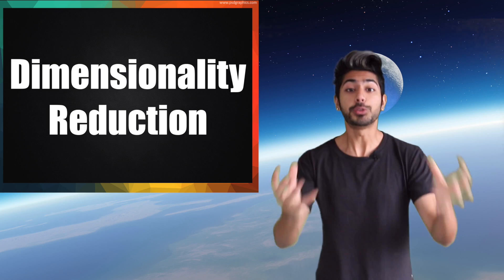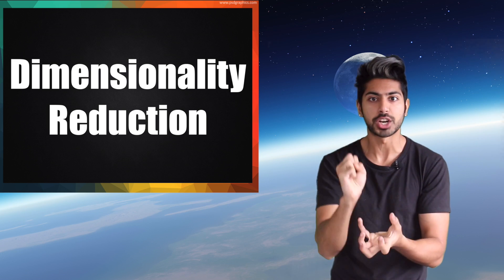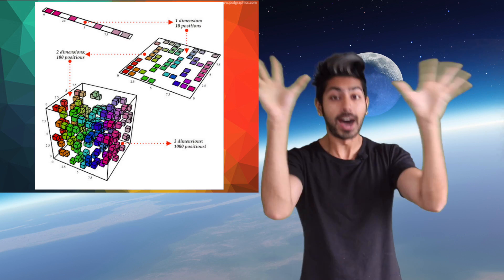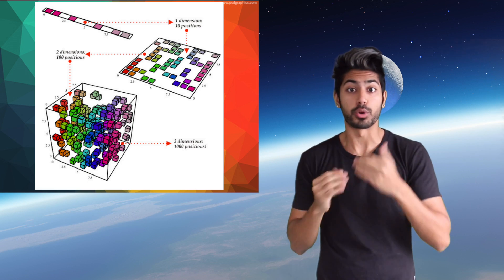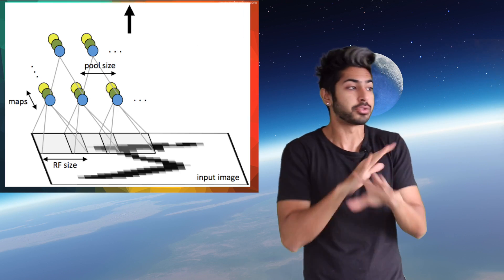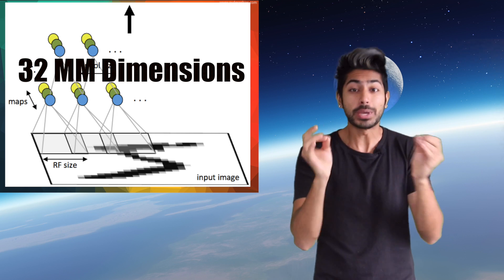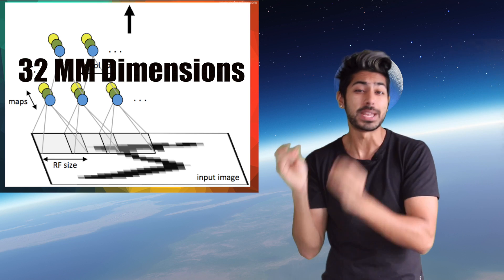There's an entire subfield of machine learning called dimensionality reduction that aims to let us represent high dimensional data in a 2D or 3D space. Even a picture can be considered to have 32 million dimensions if we consider every single pixel to be a dimension.